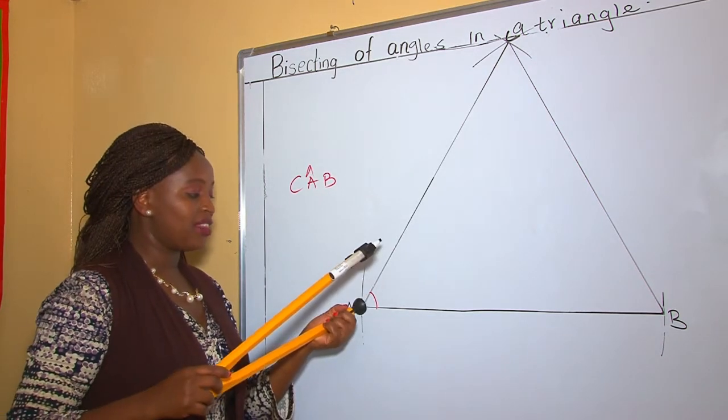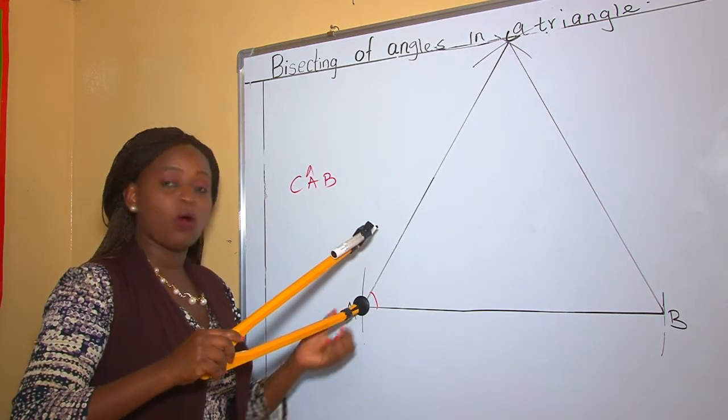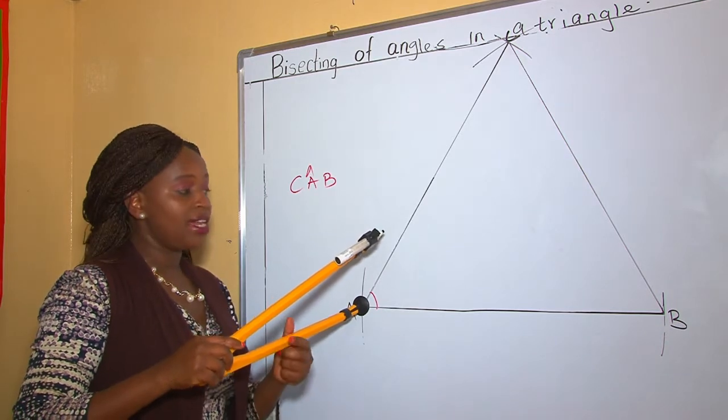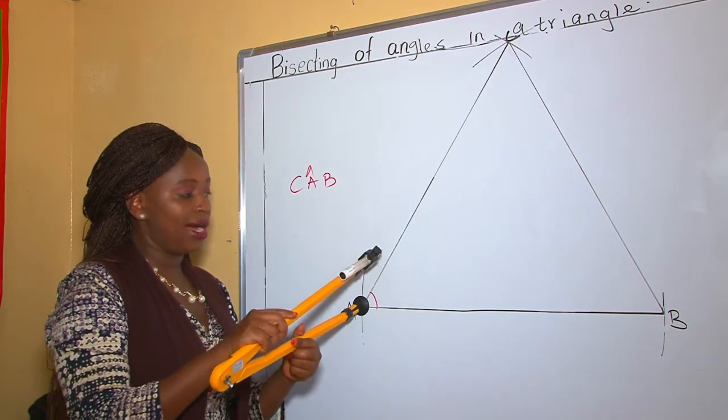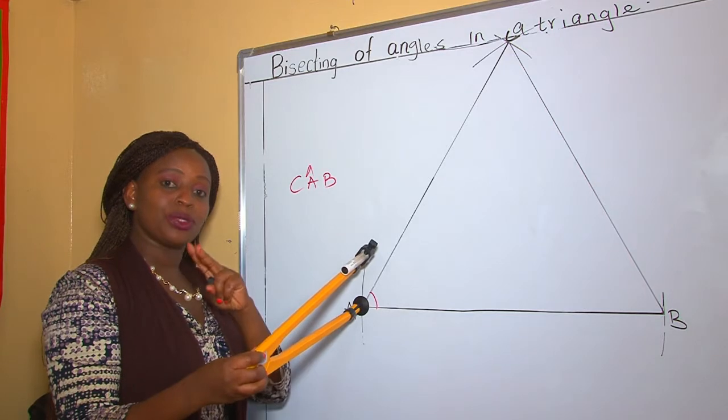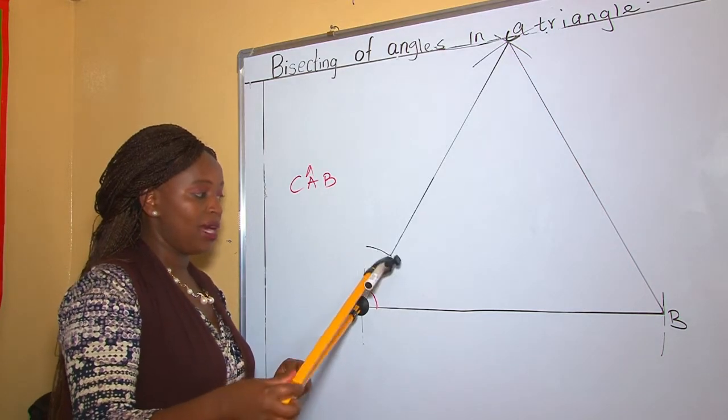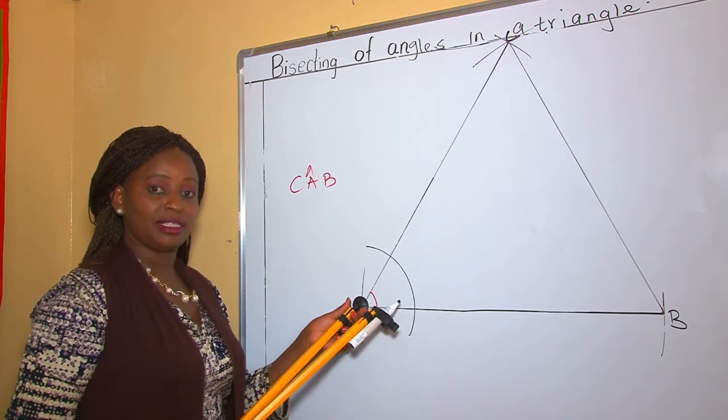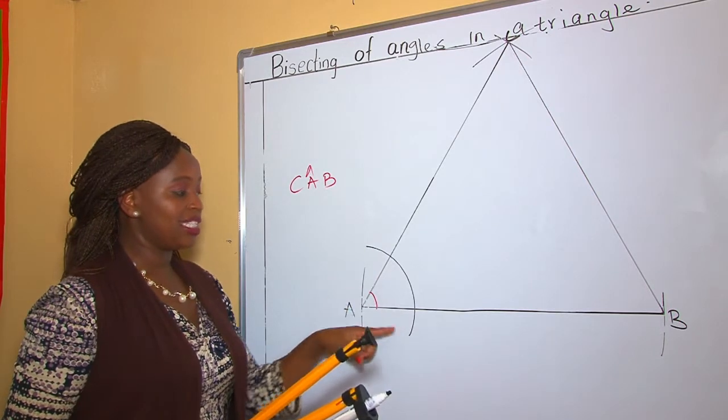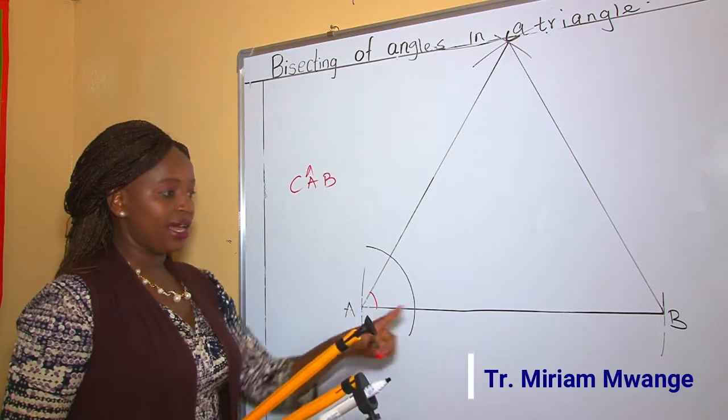We put our compass at the point of intersection of the two lines. And now we make some small arcs that cut the two lines that make that angle. So we make an arc like that. So this arc cuts line AC and line AB.